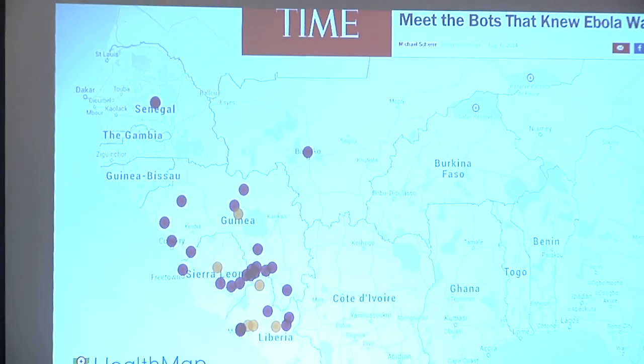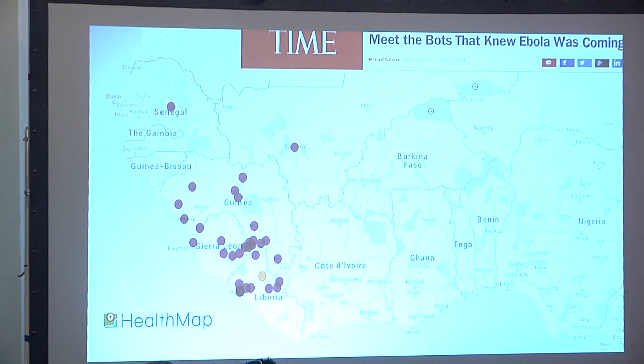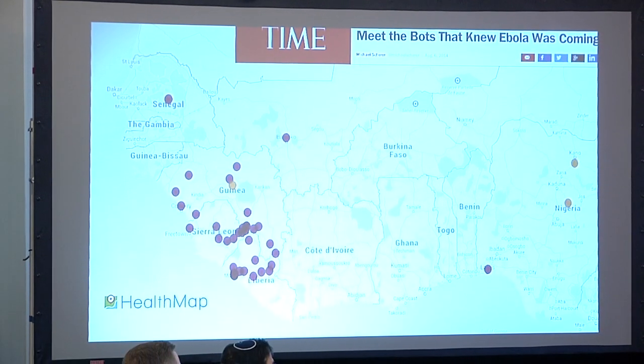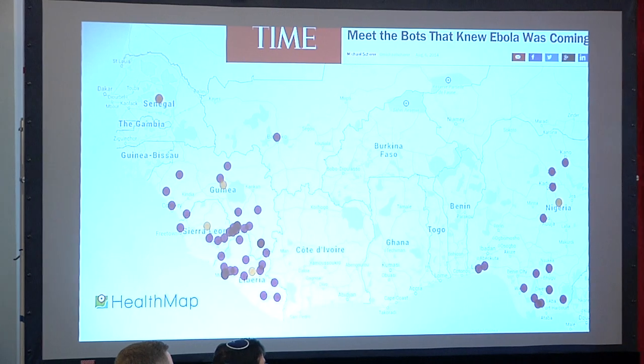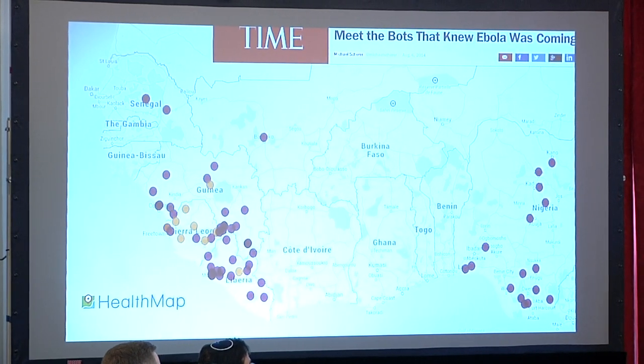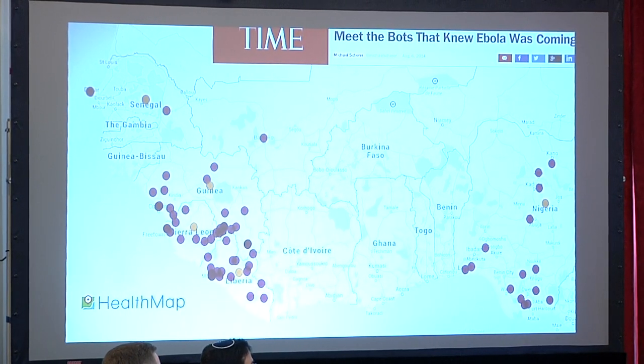This is an animation of the emergence of Ebola across West Africa. There's no way that one could produce a map like this, especially in real time, if you're accessing data from clinical records. Those records don't exist, and even if they did, there's no ability to extract them and make those available in real time to support interventions.